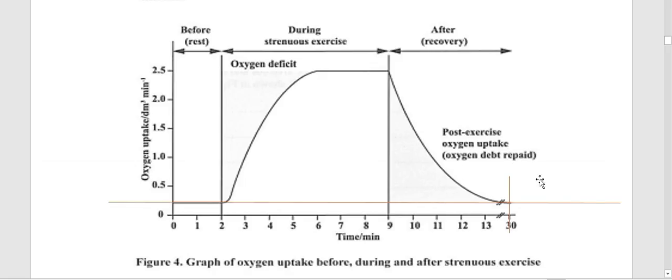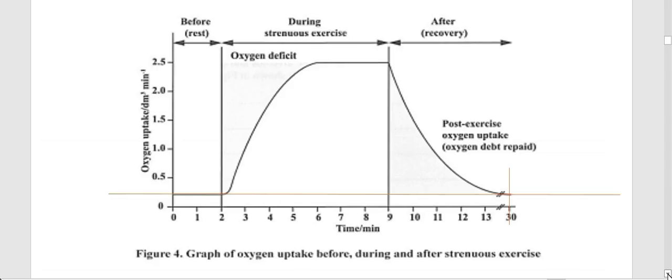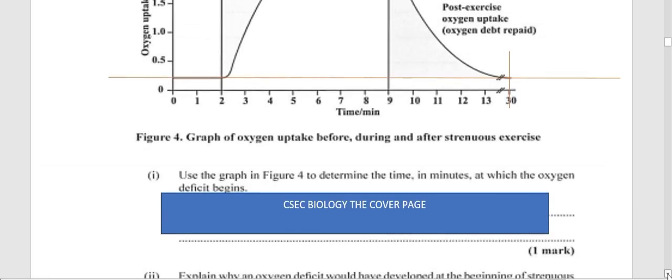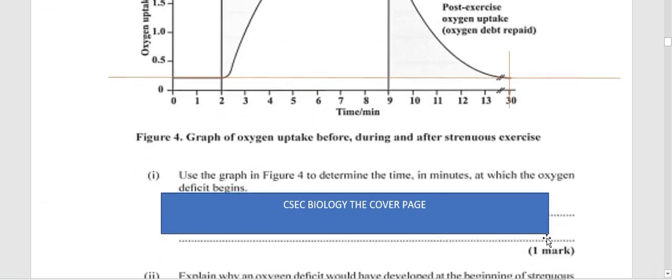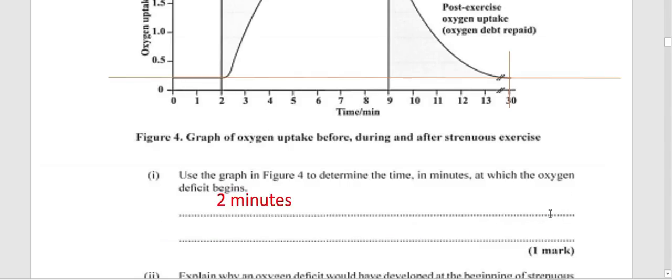Make sure you read everything on the paper: Figure 4, graph of oxygen uptake before, during, and after strenuous exercise. The question asks: use the graph in Figure 4 to determine the time in minutes at which the oxygen deficit begins. Looking at the diagram, up to two minutes we were at rest, so the oxygen deficit started at two minutes and continued through the strenuous exercise up to about nine minutes. The answer: the oxygen deficit began at two minutes.